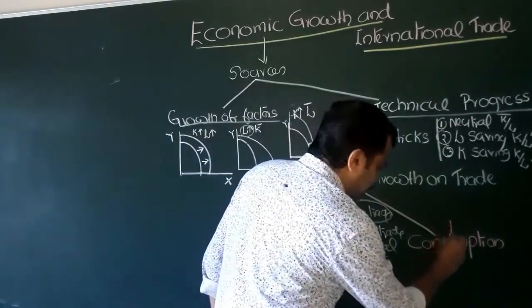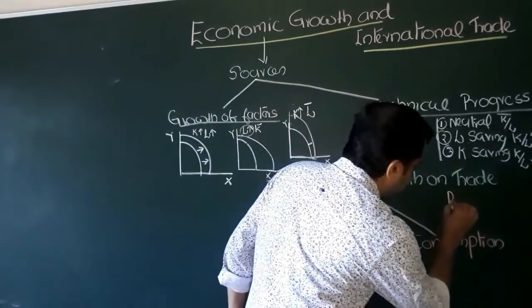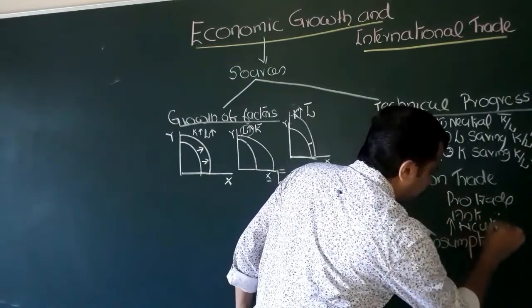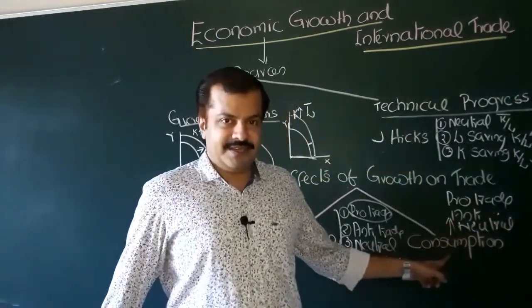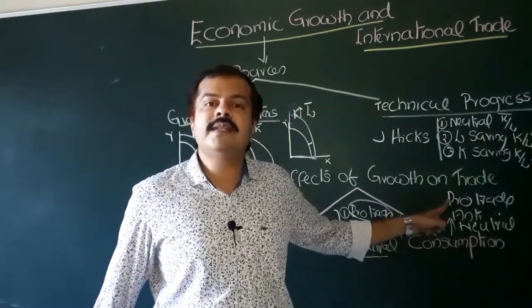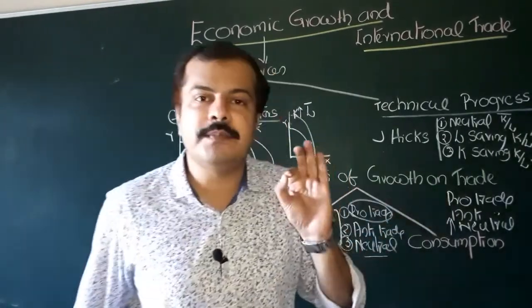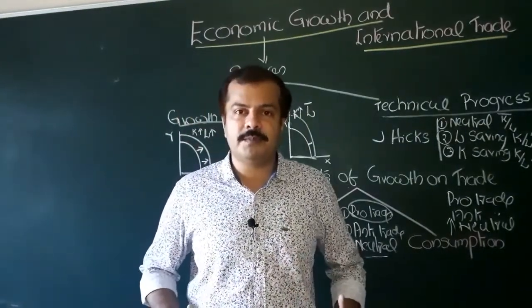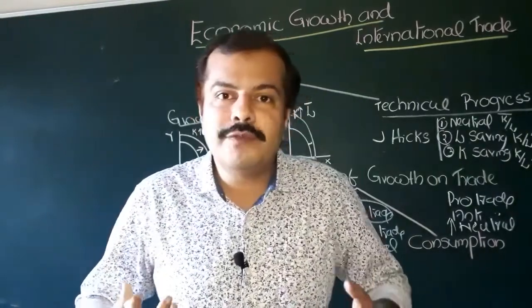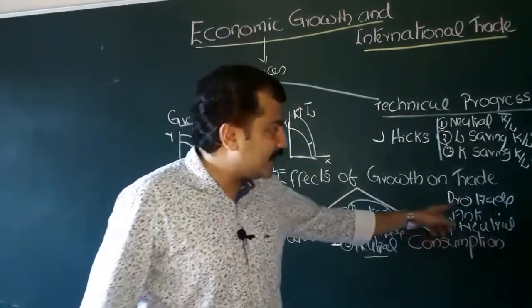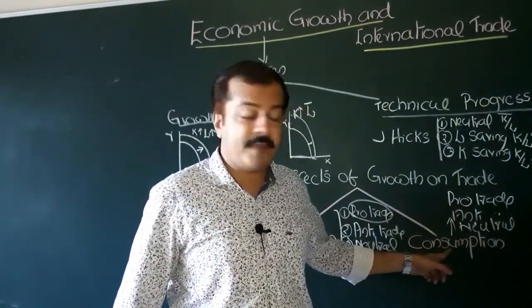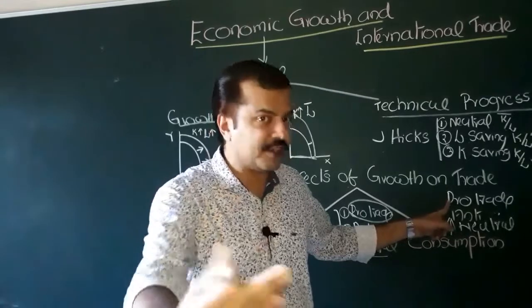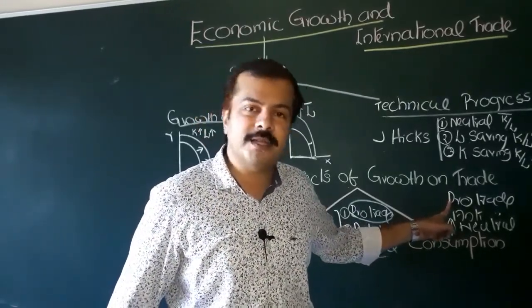Similar to production, consumption also can be pro-trade, anti-trade, or have a neutral effect. Consumption is pro-trade when the consumption of a country's importable commodity increases. When demand for importable commodity increases, that means more imports will take place and, as a result of changes in the consumption pattern, international trade will increase. So consumption is pro-trade — it is in favour of trade — when the demand or consumption of a country's importable commodity increases.